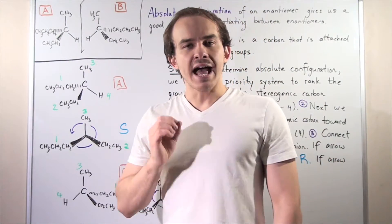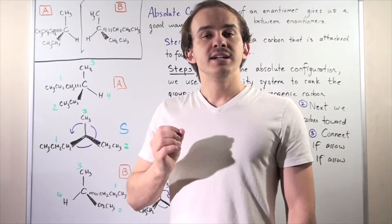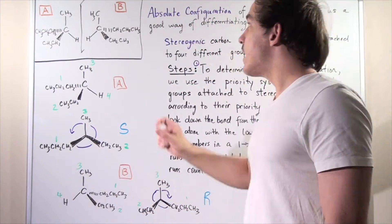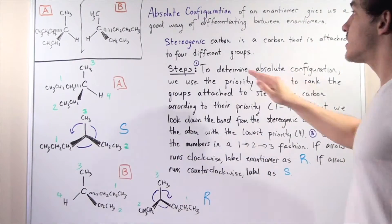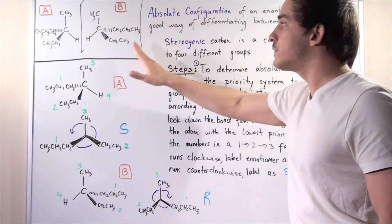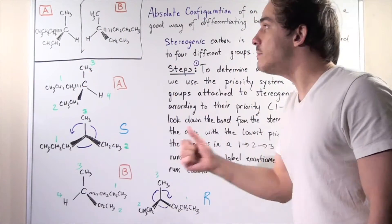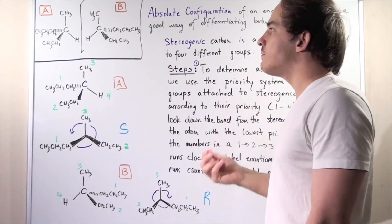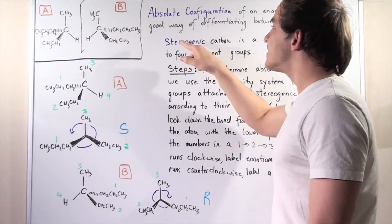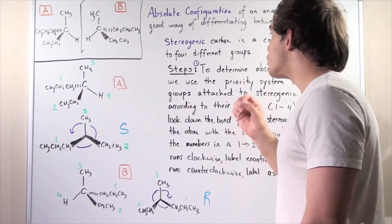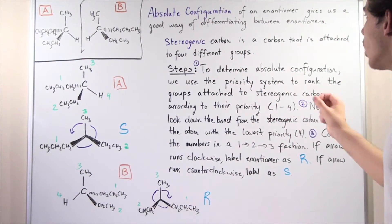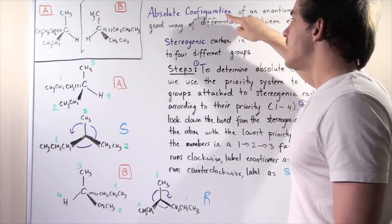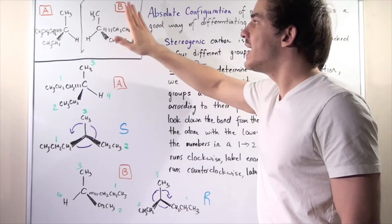So far we have spoken about enantiomers, but we have yet to develop a system to differentiate between them. That's exactly what we do in this lecture. The absolute configuration of an enantiomer gives us a good way of differentiating between and labeling our two enantiomers. Before we try to find the absolute configuration, we have to determine where our stereogenic carbon is. A stereogenic carbon is simply our chiral carbon — a carbon that is attached to four different groups.